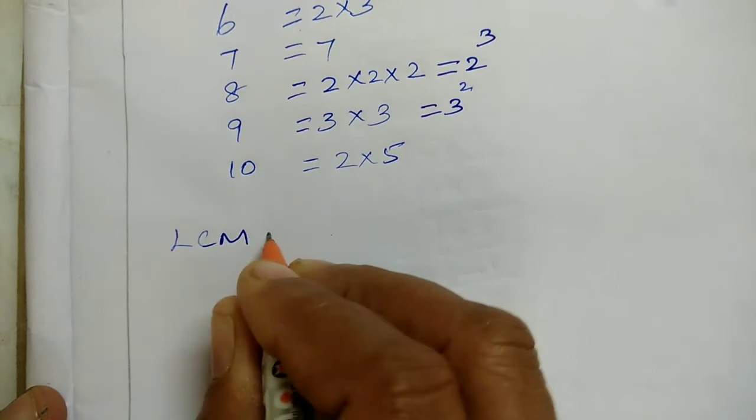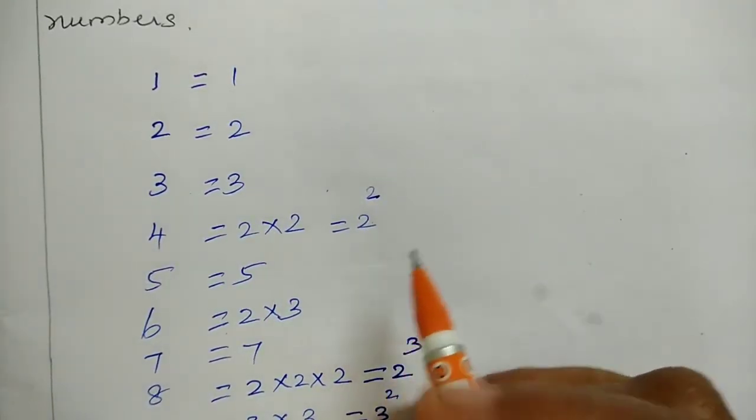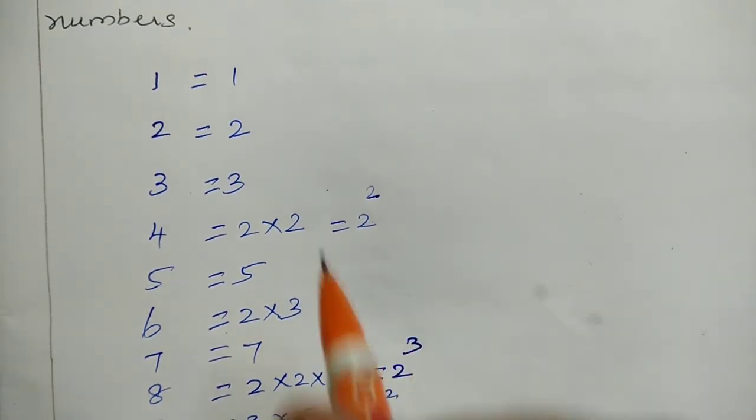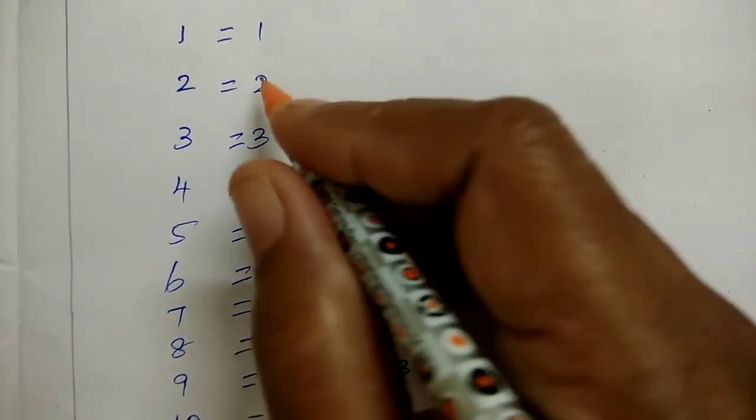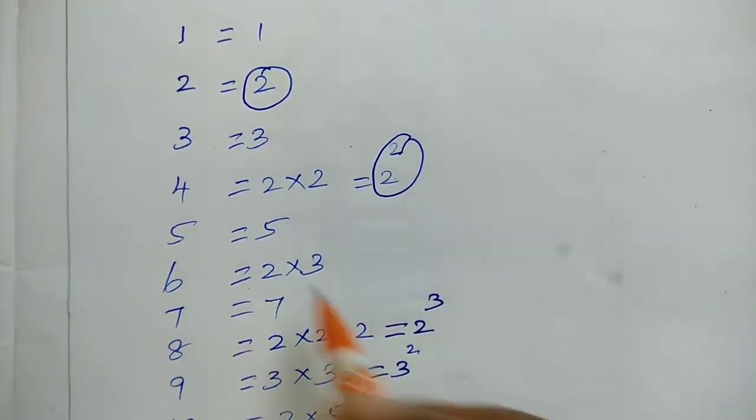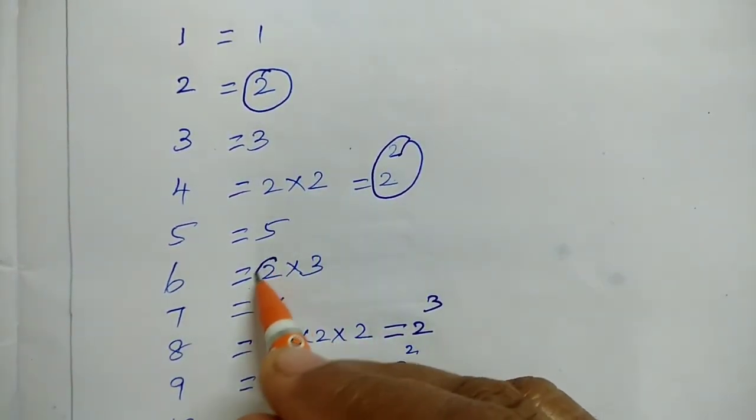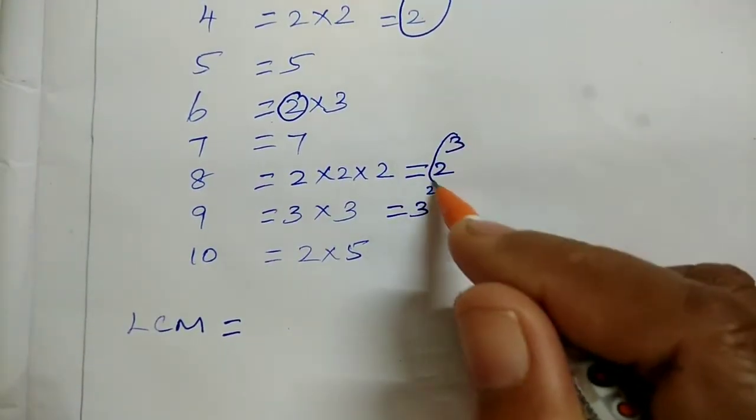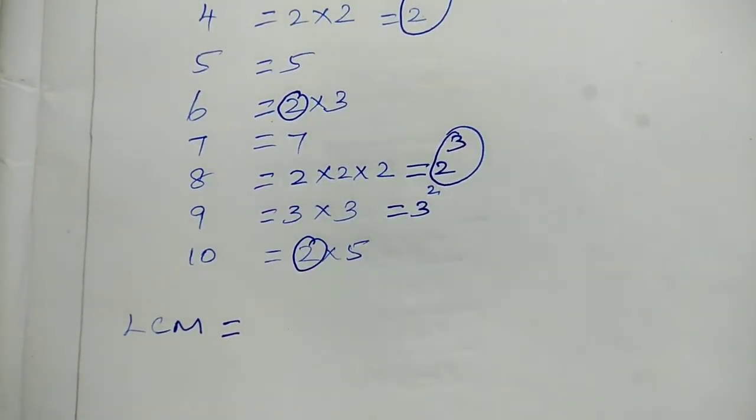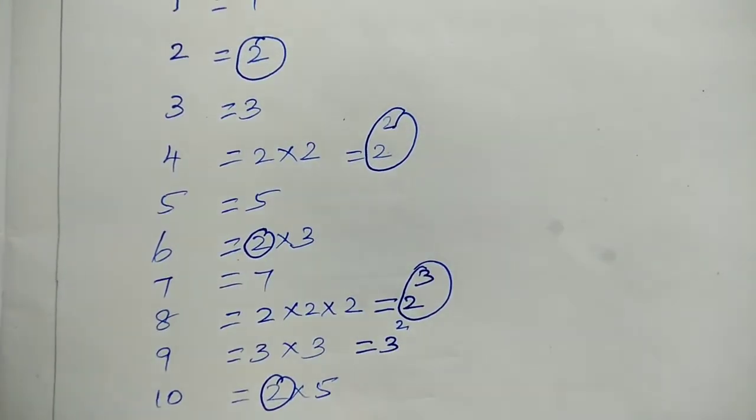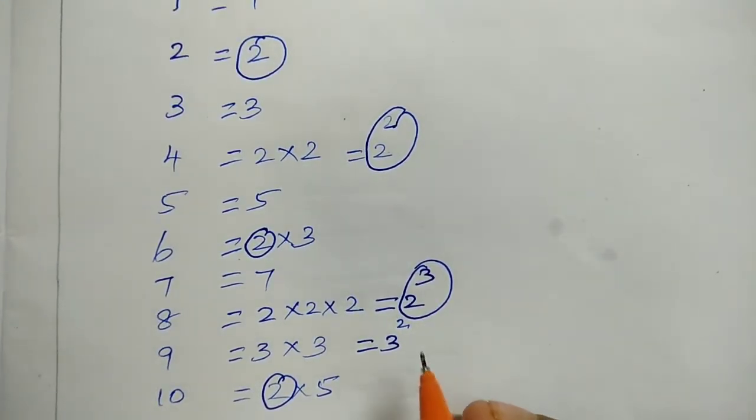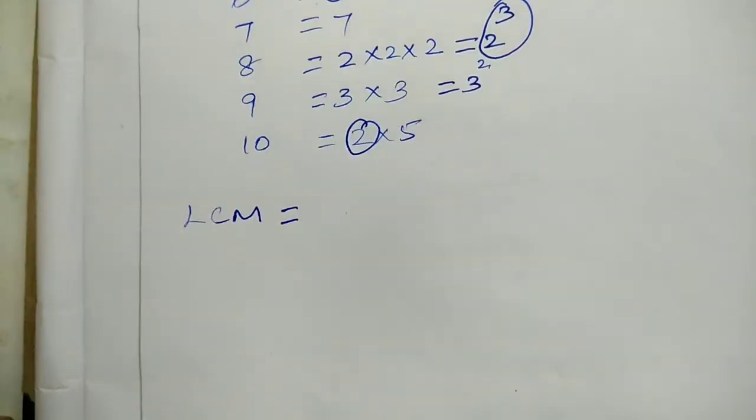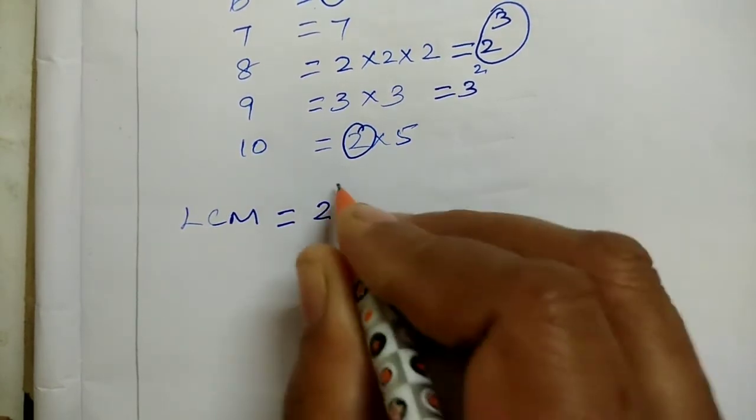Now we will find LCM. First we put 1, which we don't need. Next, 2. There's 2 squared here, 2 squared there, and 2 cubed here. We need the highest power. When finding LCM, we take the highest power. So we take 2 cubed.